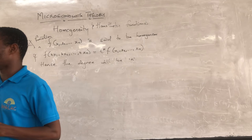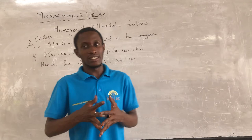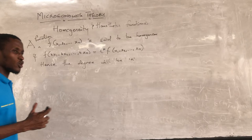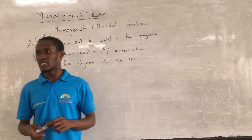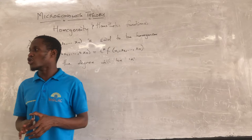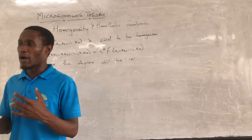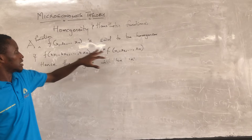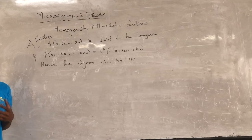Concerning homothetic functions: a homothetic function is one derived by taking a monotonic transformation of a homogeneous function. When I say monotonic transformation, it involves having a homogeneous function to degree one. A homothetic function also possesses the property of homogeneity whereby the order is preserved.